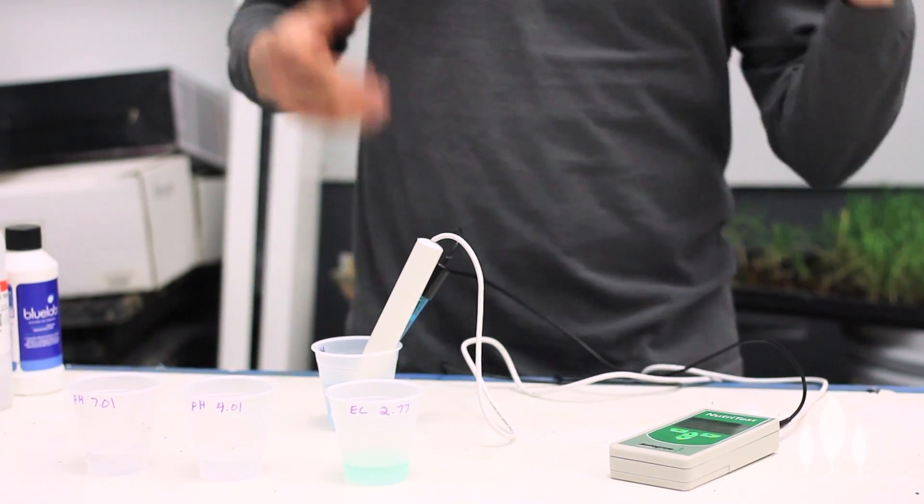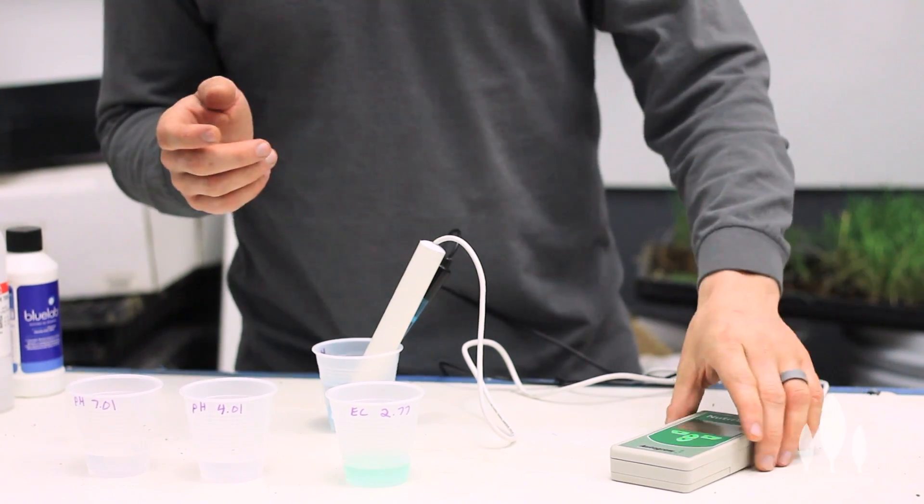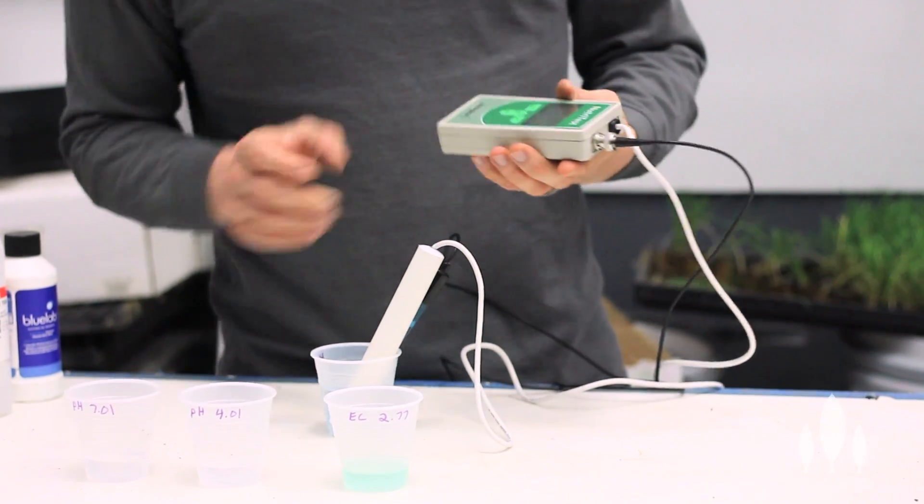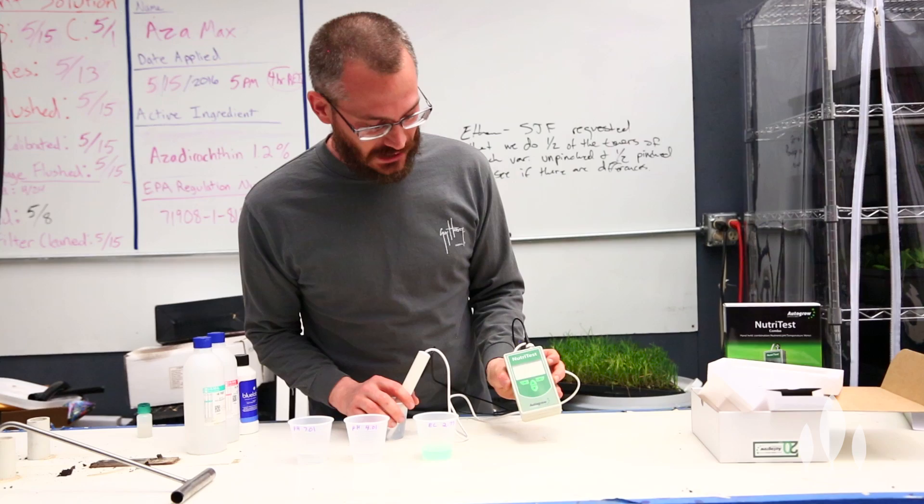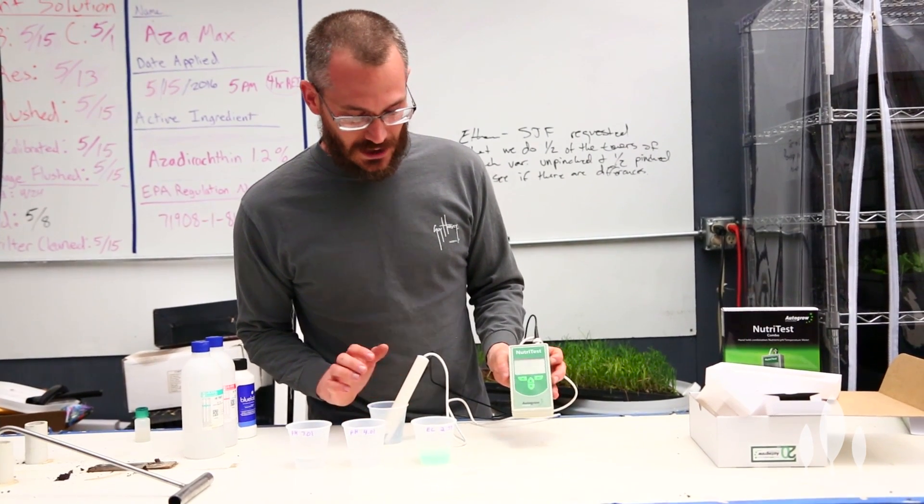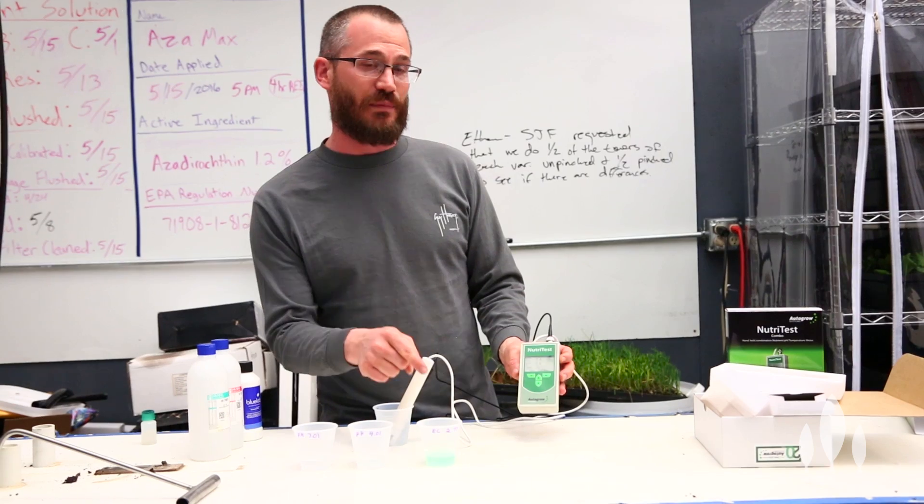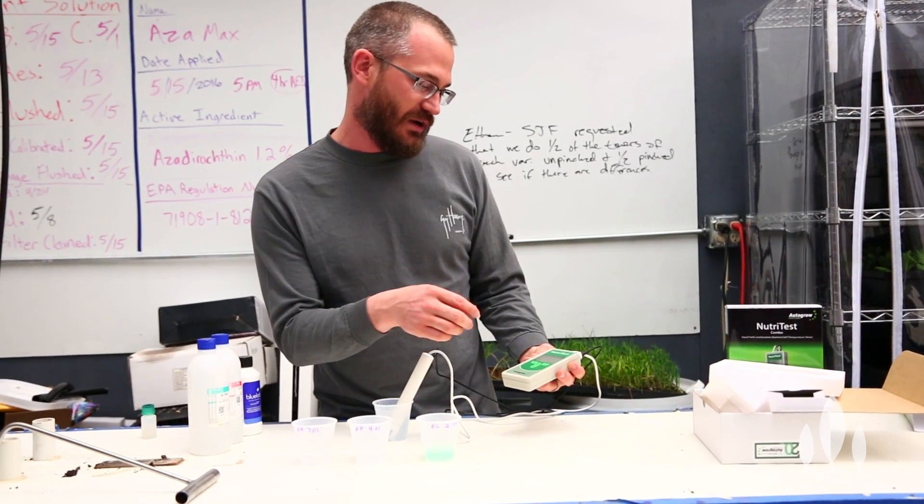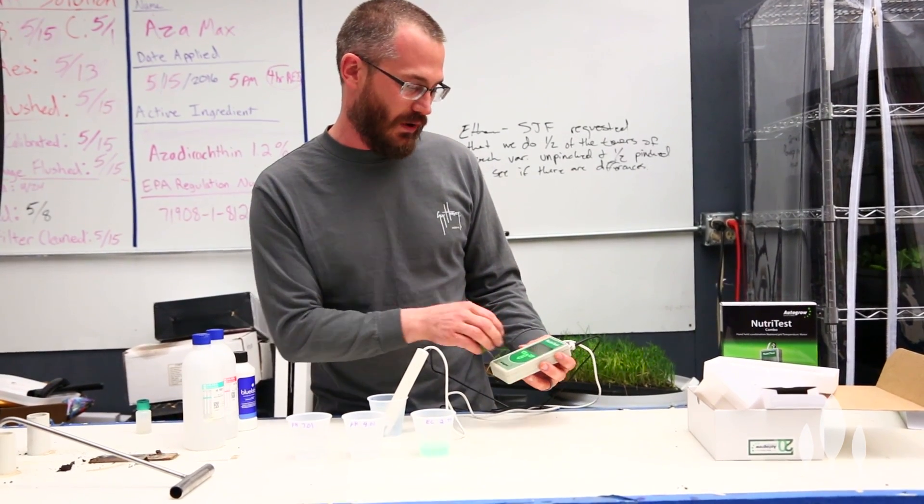And now, because they've come out of the box, theoretically, we have to calibrate it. So, to calibrate these things, you see it's already giving us measurements, temperature, EC, and pH. The first thing we're going to do is we're going to calibrate the EC. I know the EC meter is pretty much dead on right now, but we're going to do it anyway.